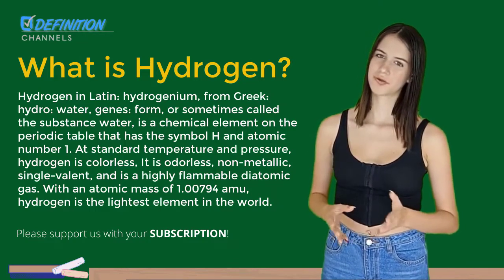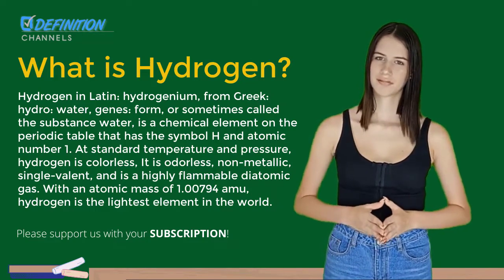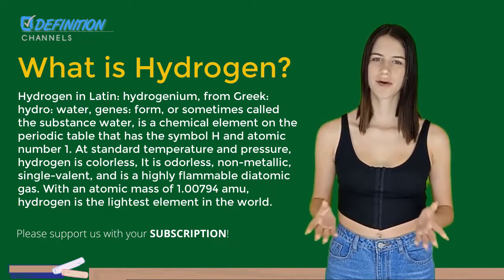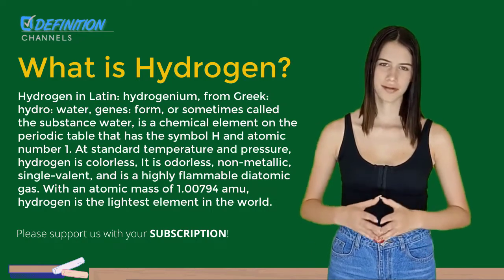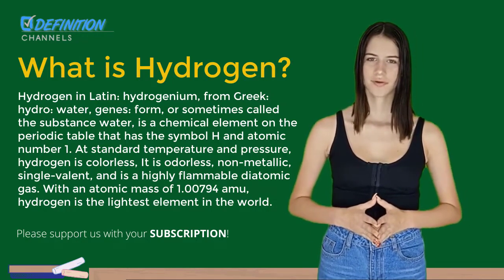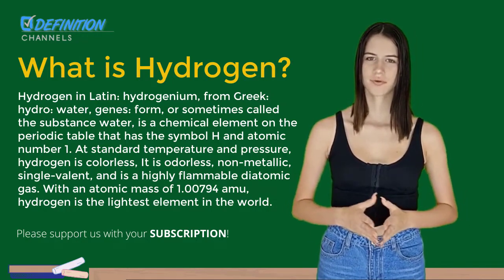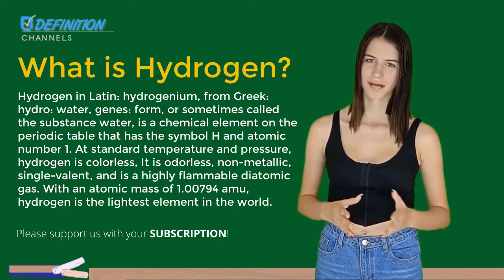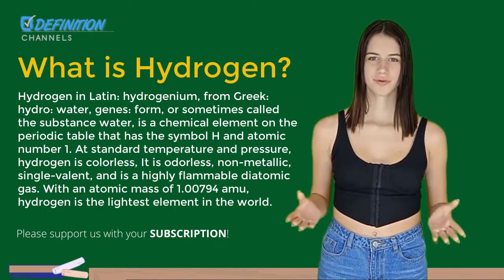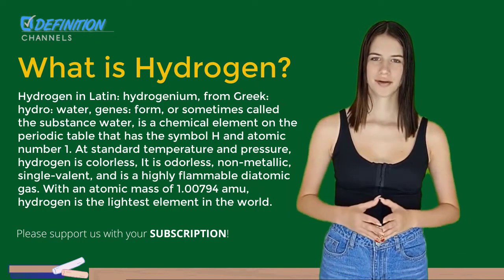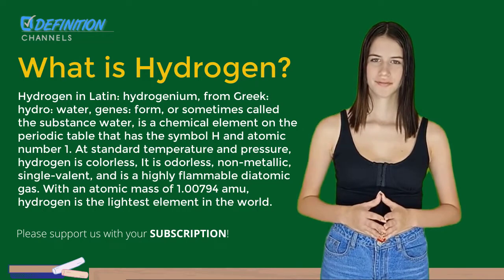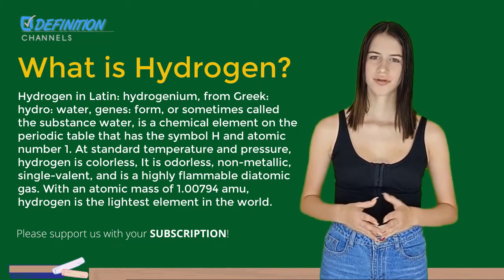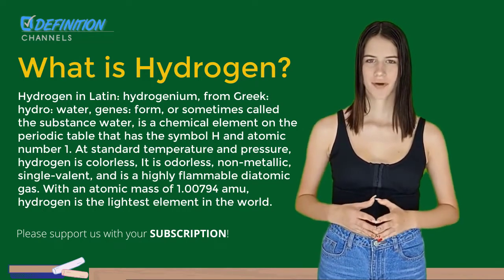Most stars are formed by Hydrogen in the plasma state. Hydrogen compounds are relatively rare and rarely found naturally on Earth, and are usually produced industrially from various hydrocarbon compounds such as methane. Hydrogen can also be produced from water by electrolysis, but this process is commercially more expensive than producing hydrogen from natural gas.